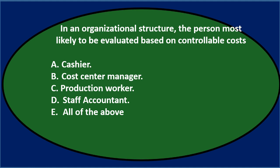First question: In an organizational structure, the person most likely to be evaluated based on controllable costs. A, cashier. B, cost center manager. C, production worker. D, staff accountant. E, all of the above.